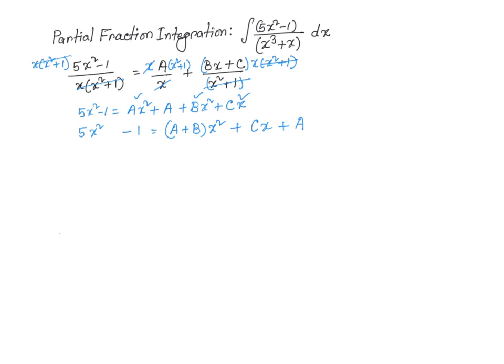Now, once again, we are dealing with an equality that involves or equation that involves polynomials on both sides. So we can go ahead and compare the coefficient of the corresponding terms on both sides. So x squared has a coefficient of 5 on the left. On the right, it's A plus B. So it must be the case A plus B is equal to 5.